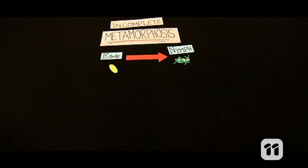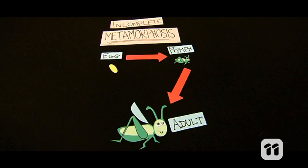When a grasshopper hatches from an egg, it's called a nymph. When the nymph grows bigger and gets wings, it becomes an adult and the cycle continues.